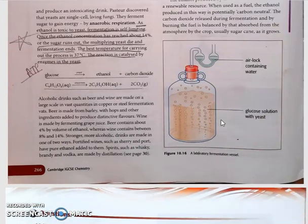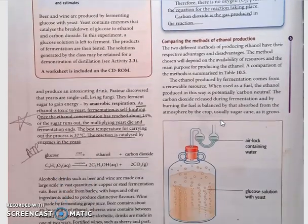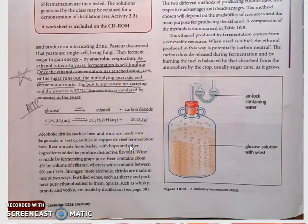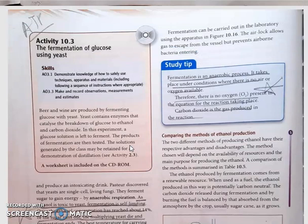Because this is an anaerobic respiration process, there should be no oxygen entering. Fermentation is an anaerobic process—it takes place under conditions where there is no air or oxygen available. Therefore, no oxygen is present in the equation for the reaction, and carbon dioxide is a gas produced in the reaction.